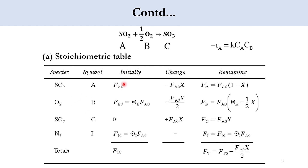Initially, the flow rate of species A is FA₀. For B, it is FB₀ or theta_B · FA₀. C is 0 — there is no SO3 present initially. For inert, it is FI₀ = theta_I · FA₀. Summing all gives FT₀. For the change row: for the limiting reactant it is −FA₀·X; for B, minus B/A = −(1/2)·FA₀·X; for C, C/A · FA₀·X = FA₀·X; and there is no change in inert.